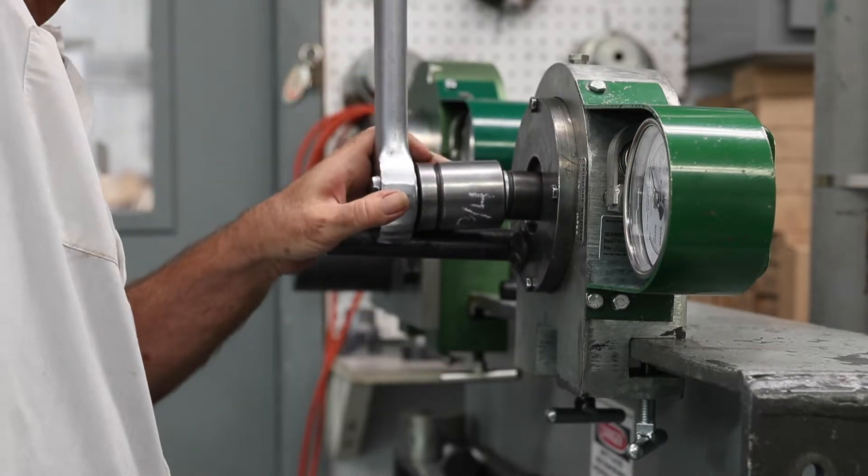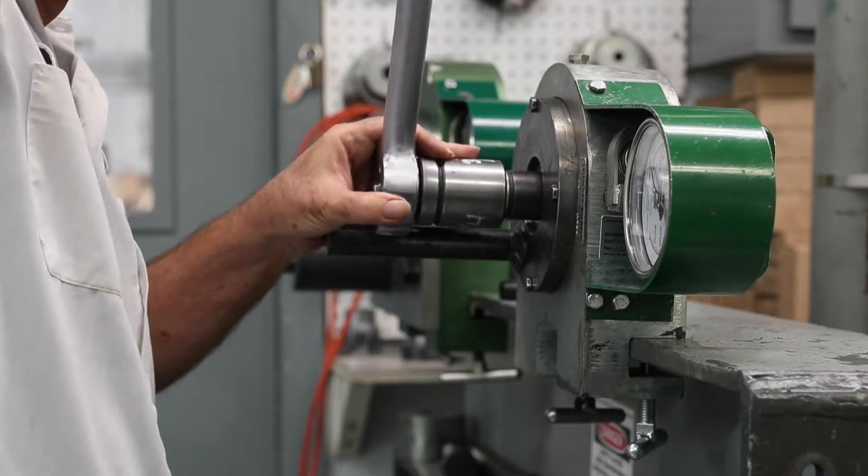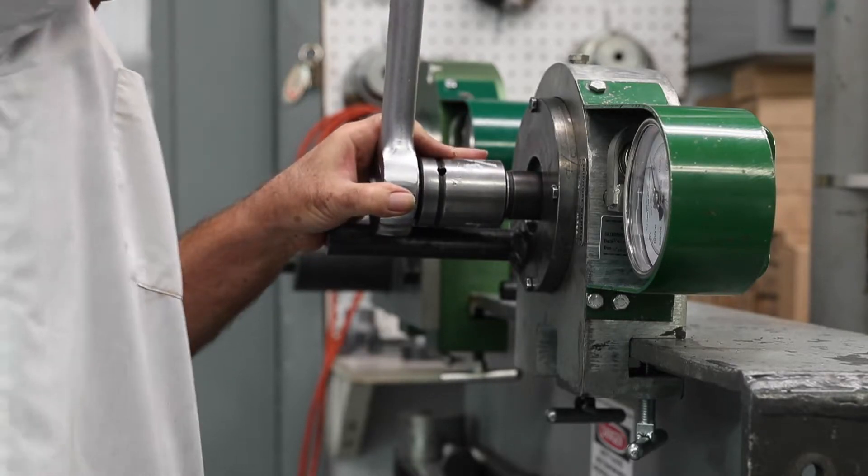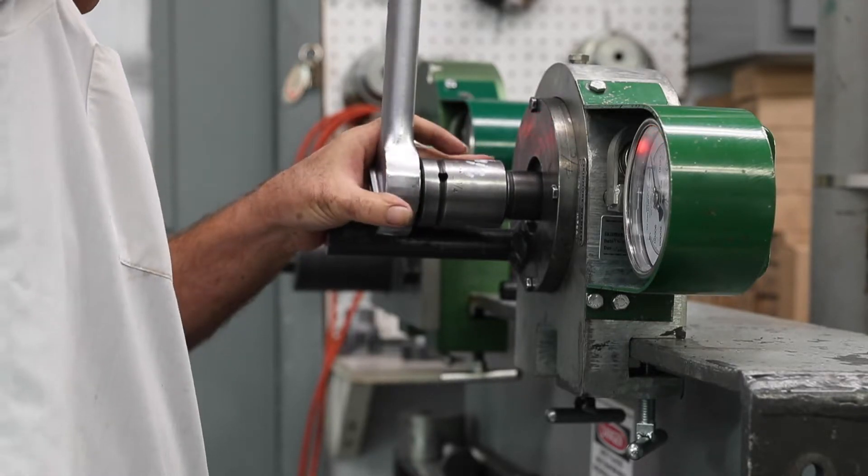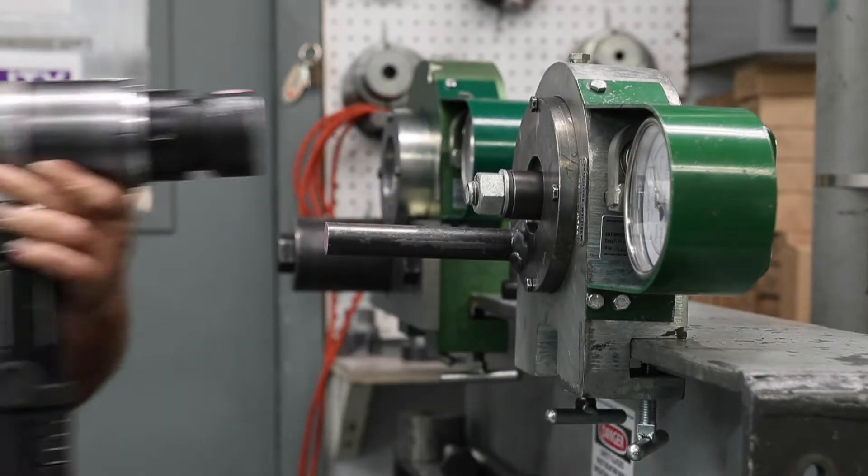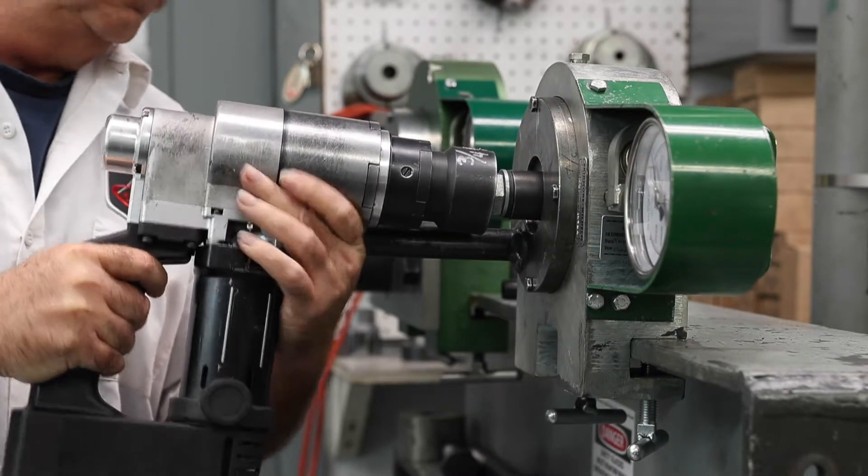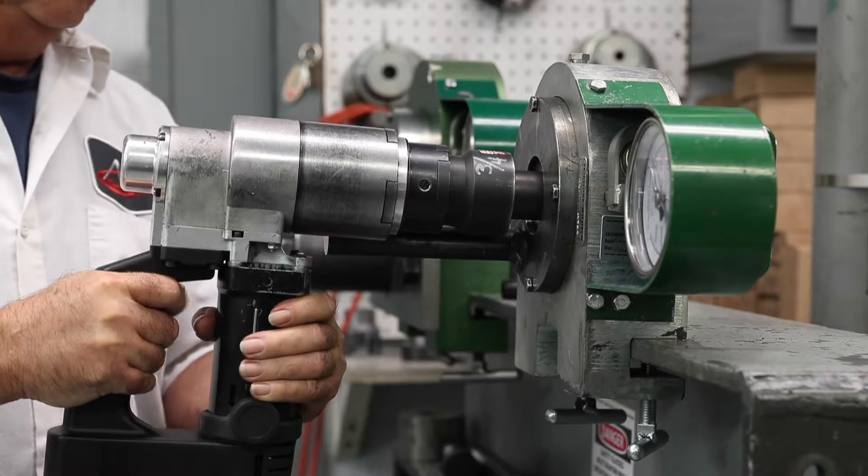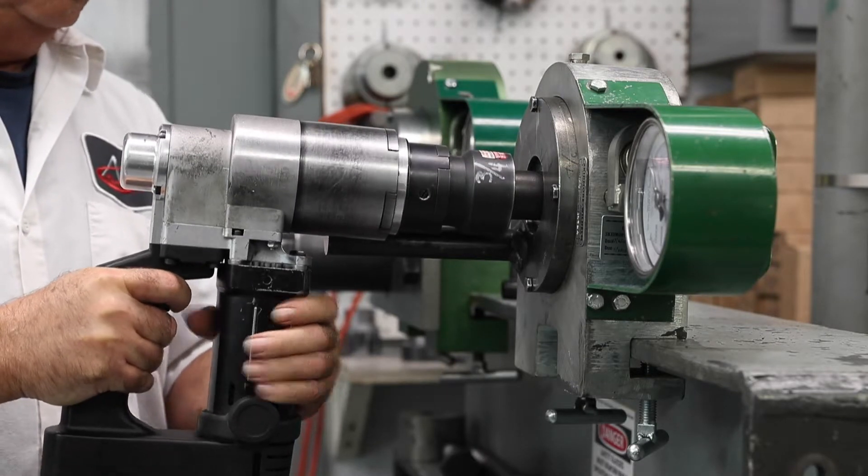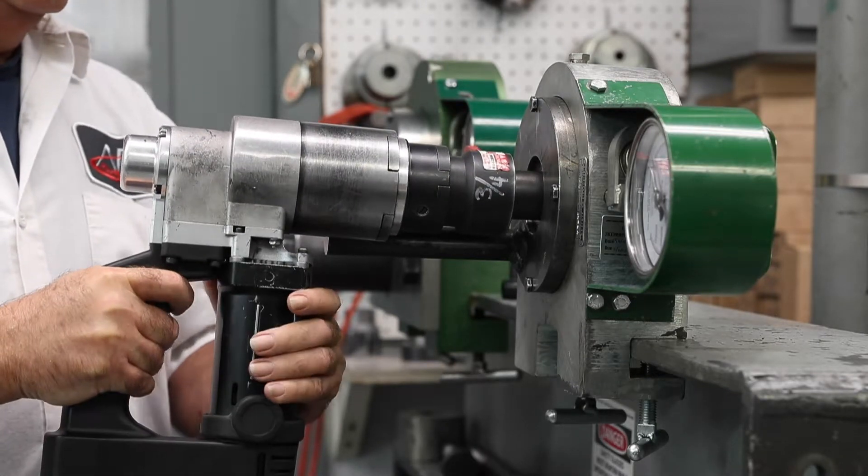The fastener assembly is then tightened to the preload tension that is listed within the applicable standard. The fastener assembly is tightened to at least the minimum installation tension listed within the standard. Both tension and torque are measured and recorded.